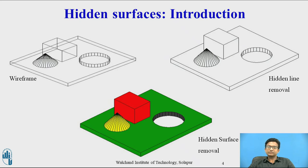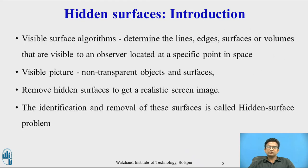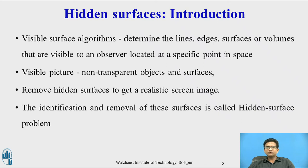In the third image, hidden surface removal, you can easily identify which object is visible and which object is invisible, and which object lies on top of another object. This is the hidden surface problem. Visible surface algorithms attempt to determine the lines, edges, surfaces, or volumes that are visible to an observer located at a specific point in space. When we view a picture containing non-transparent objects and surfaces, we must remove hidden surfaces to get a realistic screen image. The identification and removal of these surfaces is called the hidden surface problem.